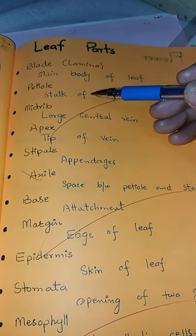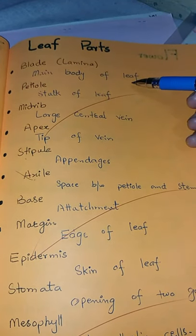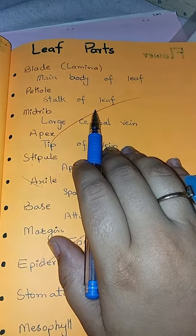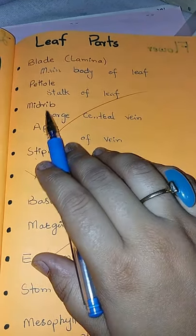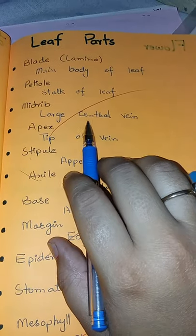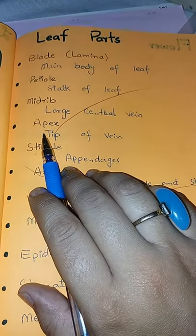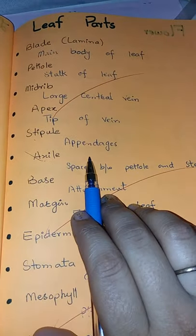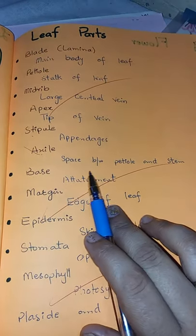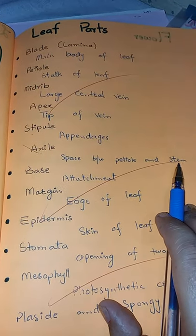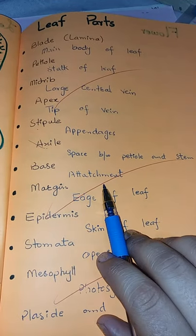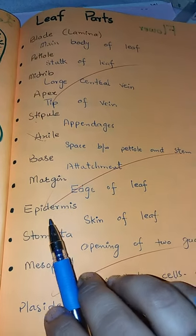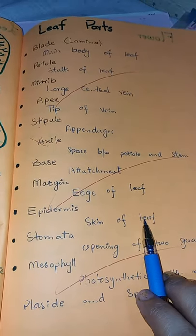The main body of the leaf includes the midrib, which is the large central vein, and the apex at the tip. Other parts include the axil, the base, and the margin, which is the attachment edge of the leaf blade.